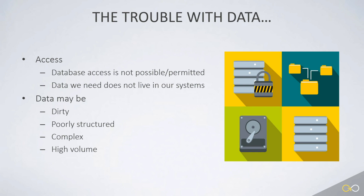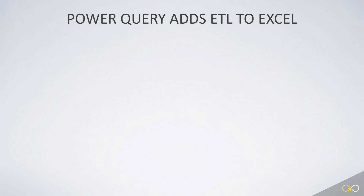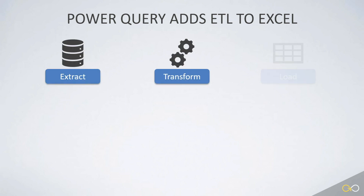That's why we now have Power Query. Power Query adds ETL to Excel. If you're not familiar with that three-letter acronym, it stands for Extract, Transform, and Load. This is the process you go through when building a business intelligence solution: you grab data from somewhere, clean it up, transform it a little, and then load it into a worksheet so you can actually work with it. Power Query makes this job a lot easier.